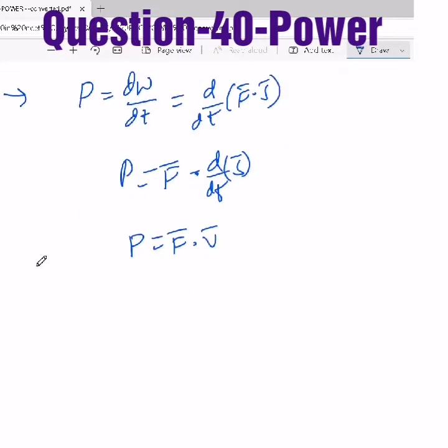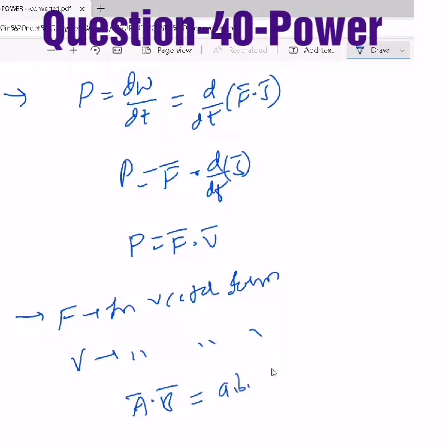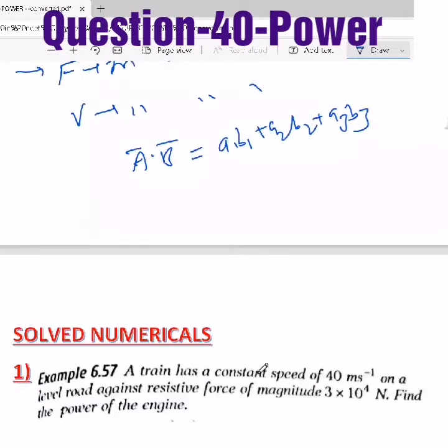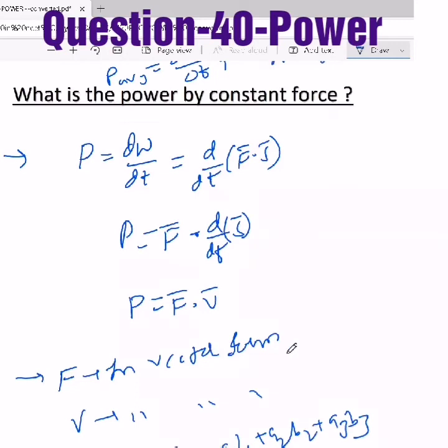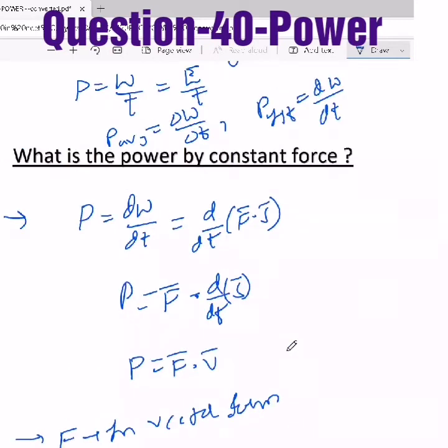So power by a constant force is the dot product of force and velocity. They will give force in vector form and velocity also in vector form. Then you have to apply the dot product: a⃗·b⃗ = a₁b₁ + a₂b₂ + a₃b₃, that is the product of i coefficients plus j coefficients plus k coefficients.